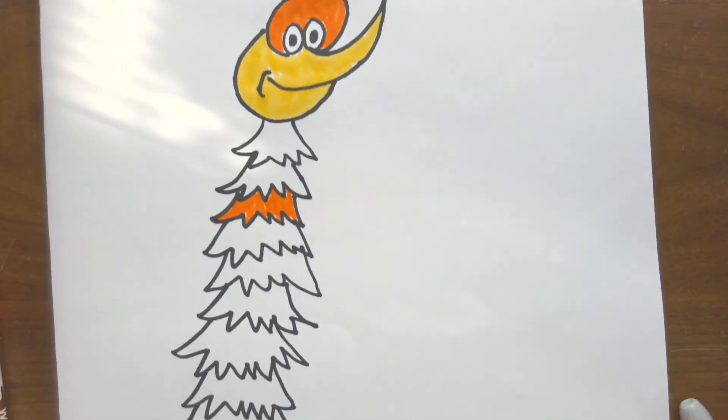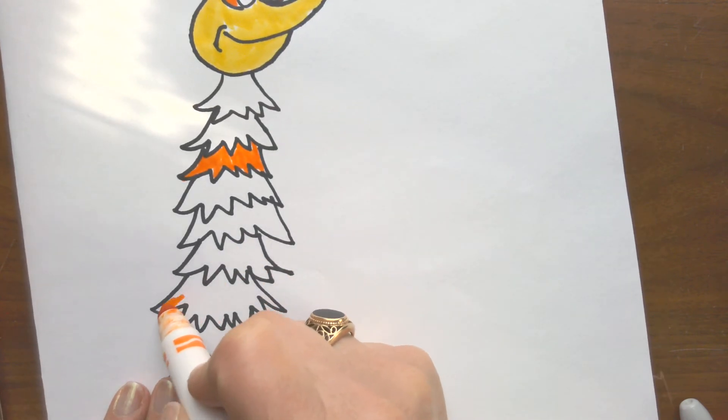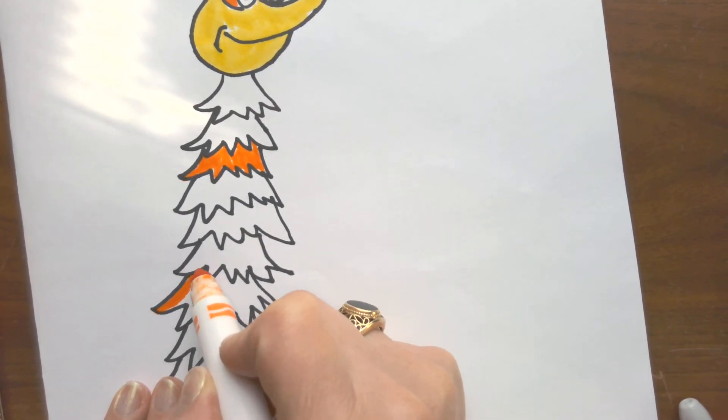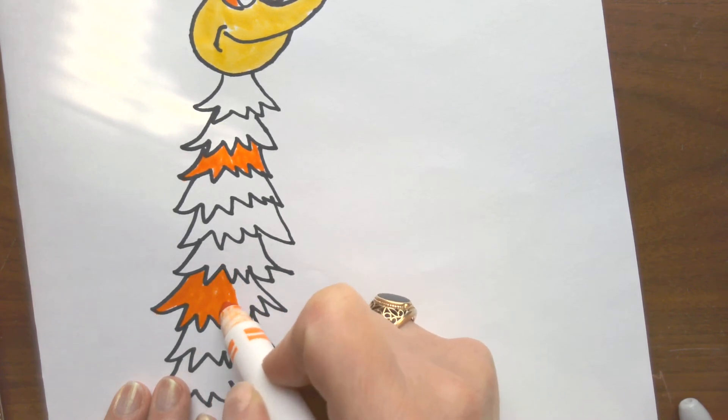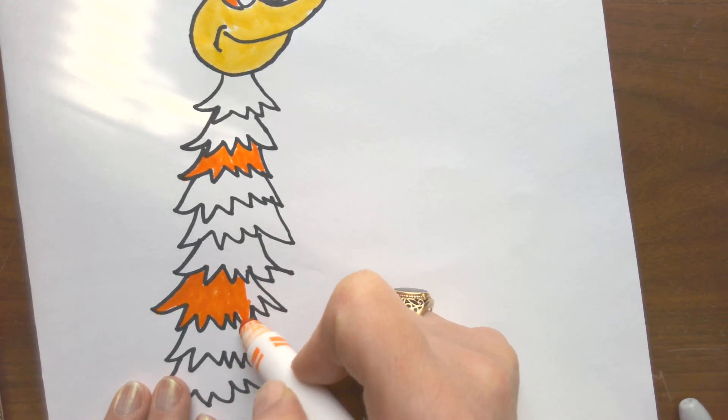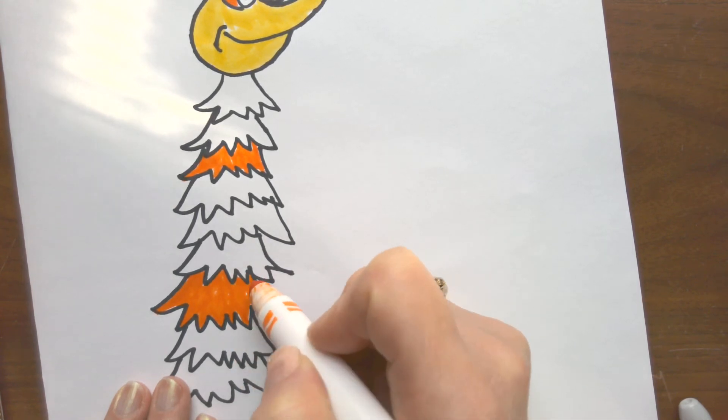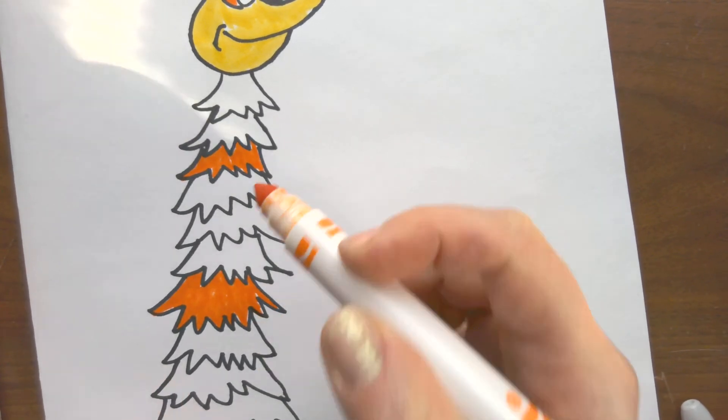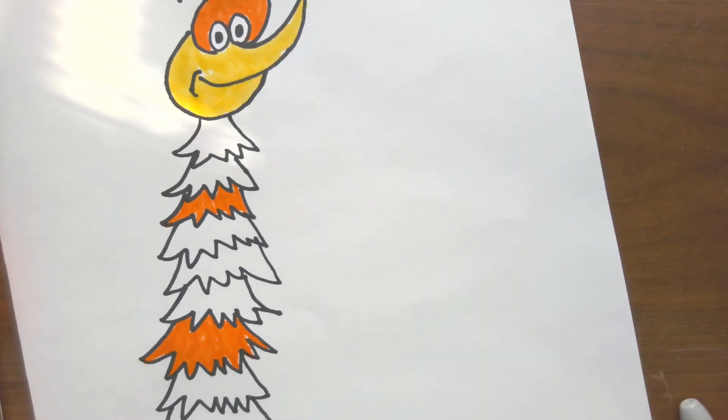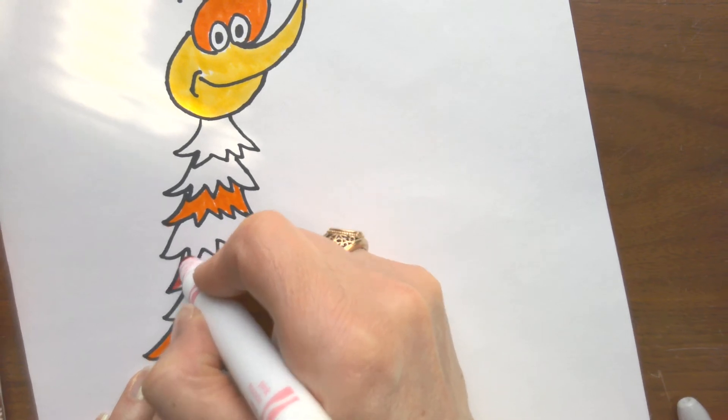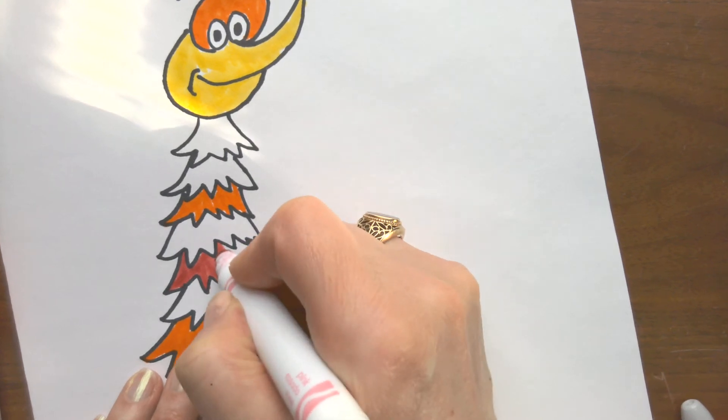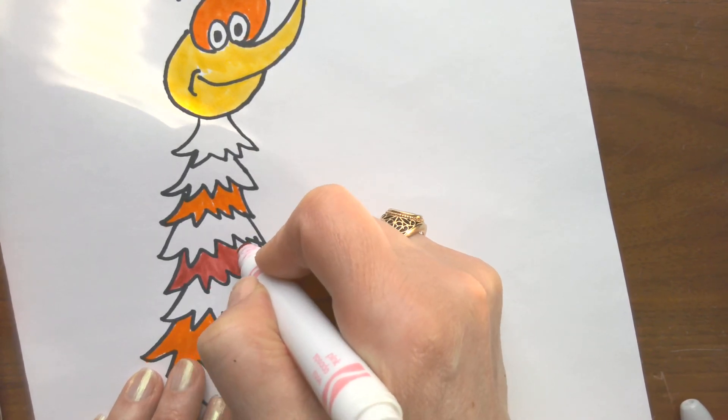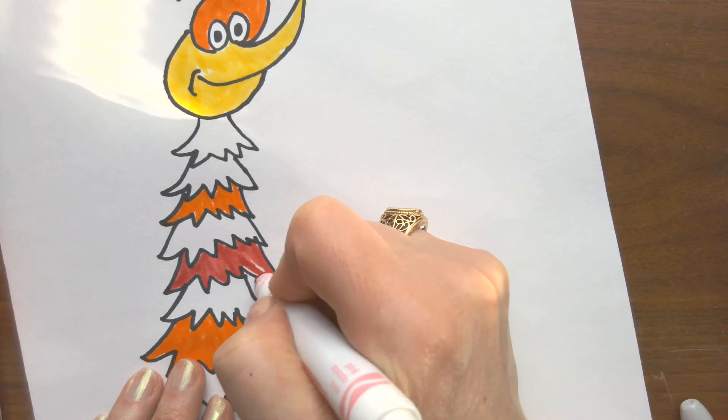I've also seen where students have added stripes or polka dots or horizontal lines or diagonal lines or zigzag lines to their design. If you want to do that, I'll show you what that would look like.